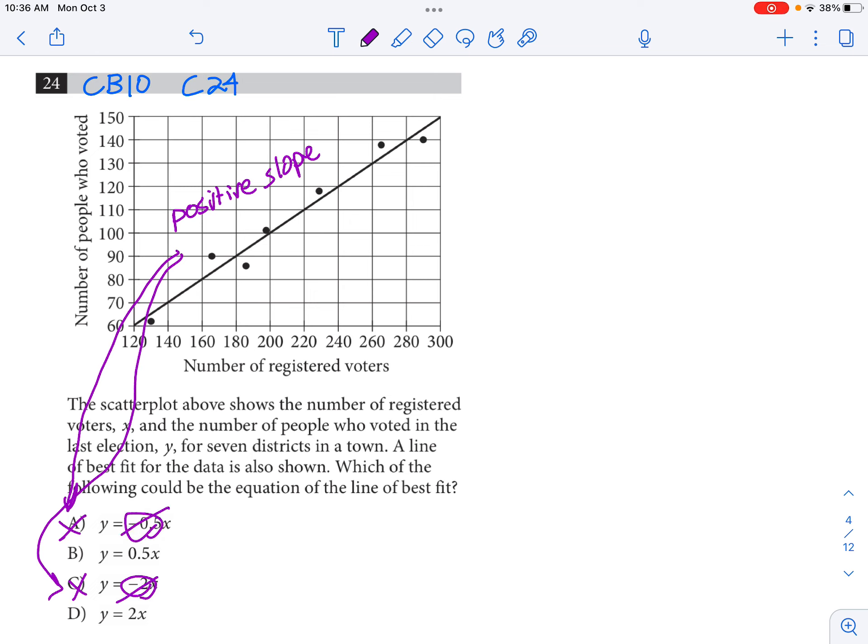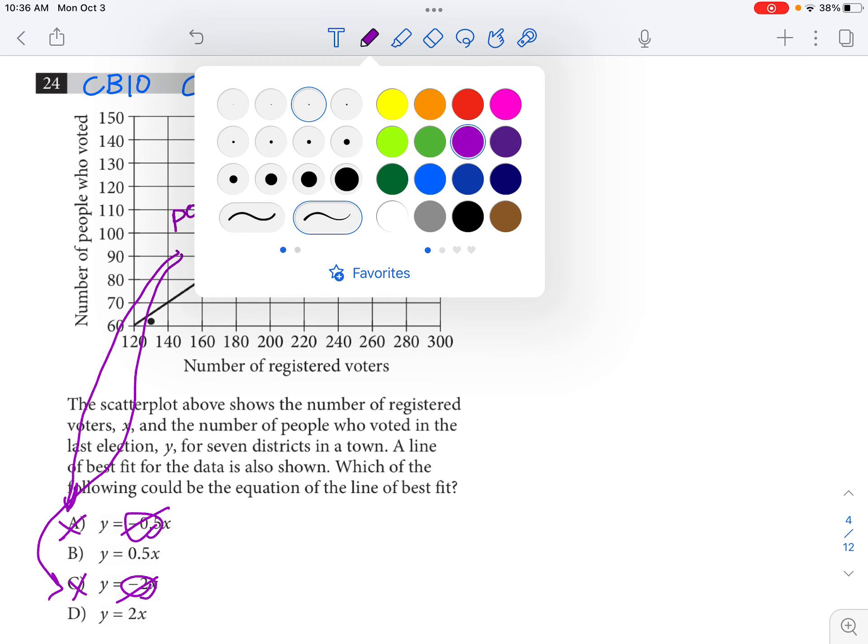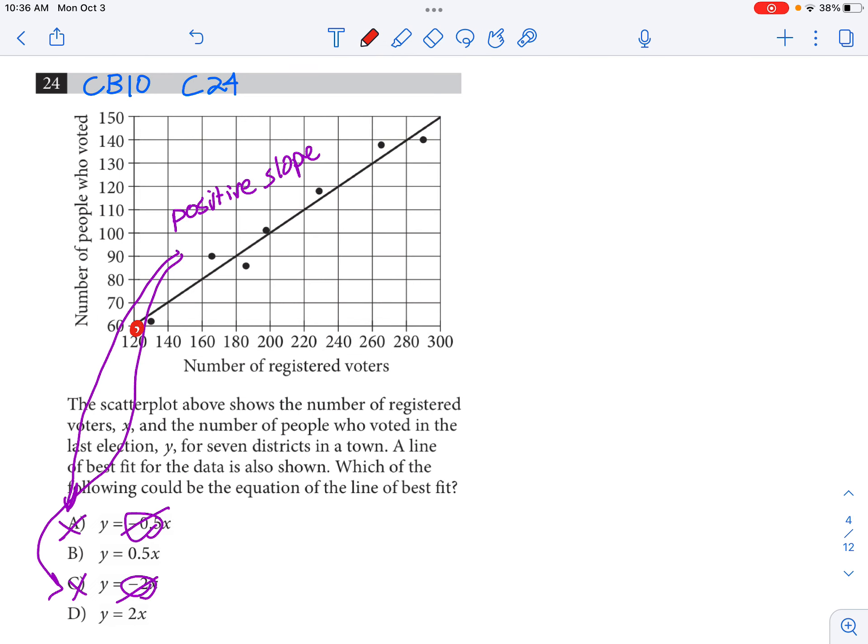So we're picking between B and D and the best way to typically do this is try to find two points on the curve that we know the coordinates for and then use those coordinates to just plug into y2 minus y1 over x2 minus x1.